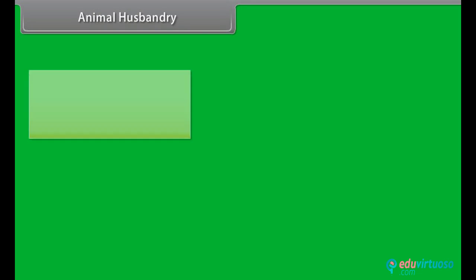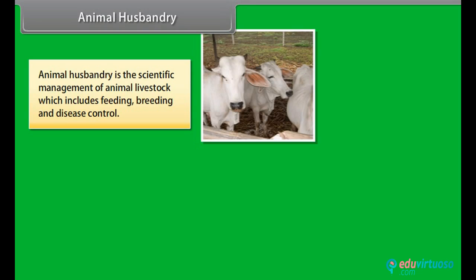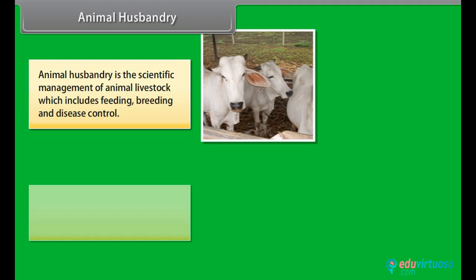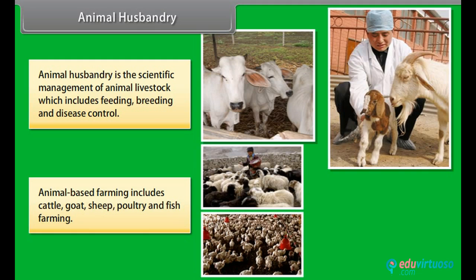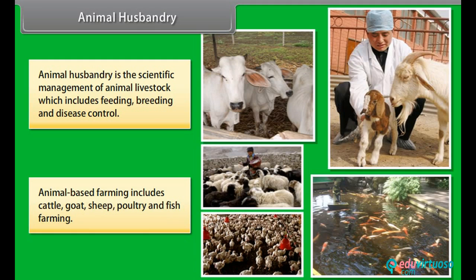Animal husbandry is the scientific management of animal livestock, which includes feeding, breeding and disease control. Animal-based farming includes cattle, goat, sheep, poultry and fish farming.